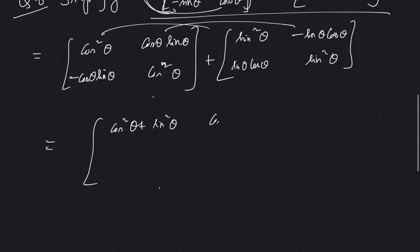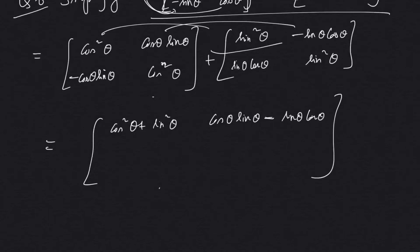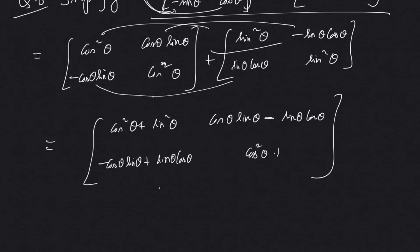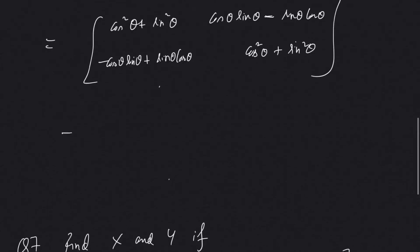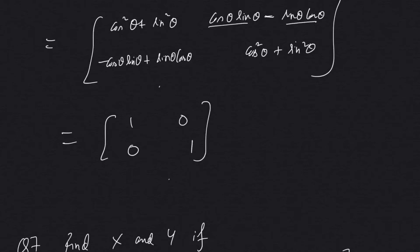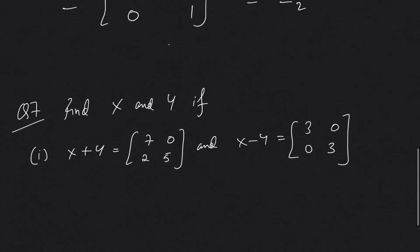Adding corresponding elements: cos²θ + sin²θ = 1. The off-diagonal terms: cos θ sin θ − cos θ sin θ = 0, and sin θ cos θ − sin θ cos θ = 0. Then −sin θ cos θ + sin θ cos θ = 0, and cos²θ + sin²θ = 1. Using the trigonometric identity from Class 10, we get an identity matrix of order 2.